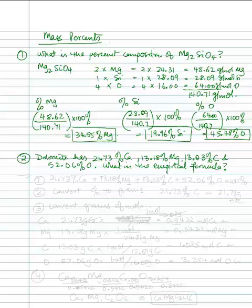Here is your strategy. First, add all the percents: 21.73% calcium plus 13.18% magnesium plus 13.03% carbon plus 52.06% oxygen should give you 100%. If it does not, then we have a problem. Check this first. The second thing is to convert percents to grams, which is not a big conversion because 21.73% calcium is equivalent to 21.73 grams.